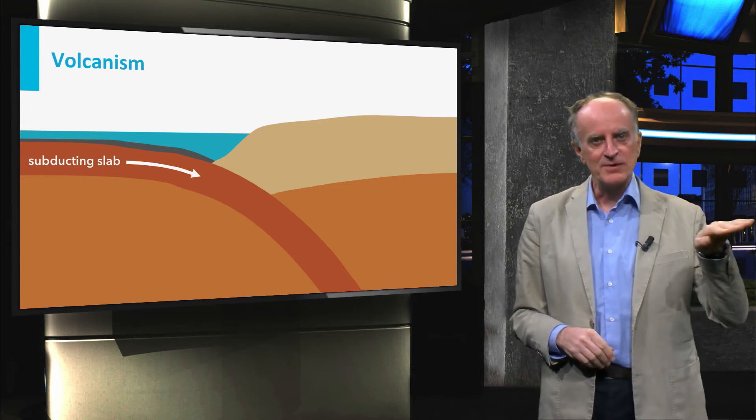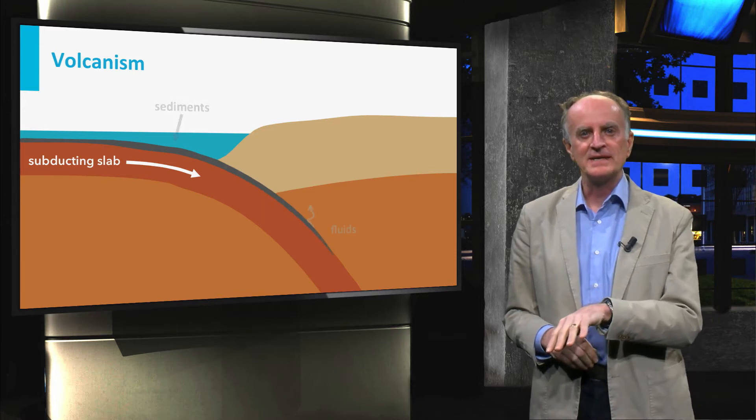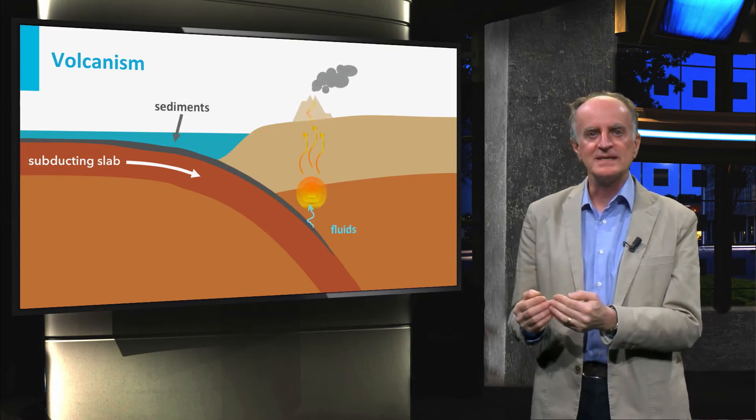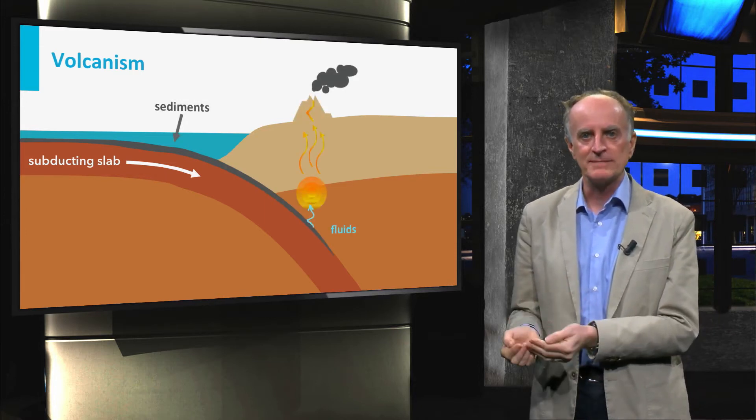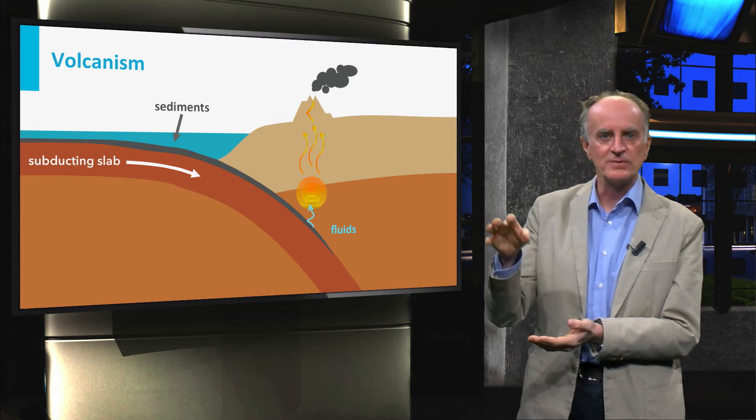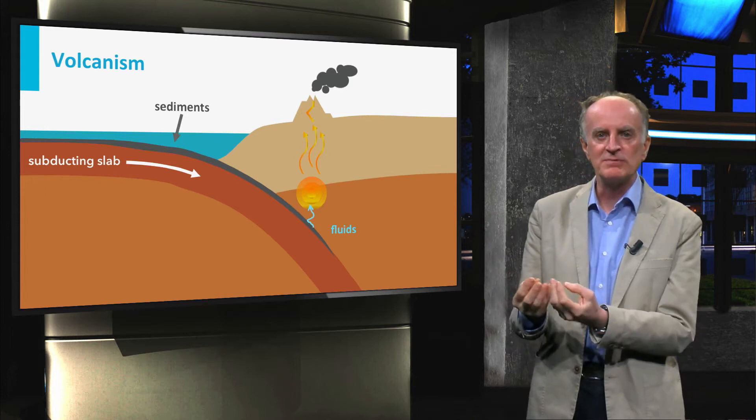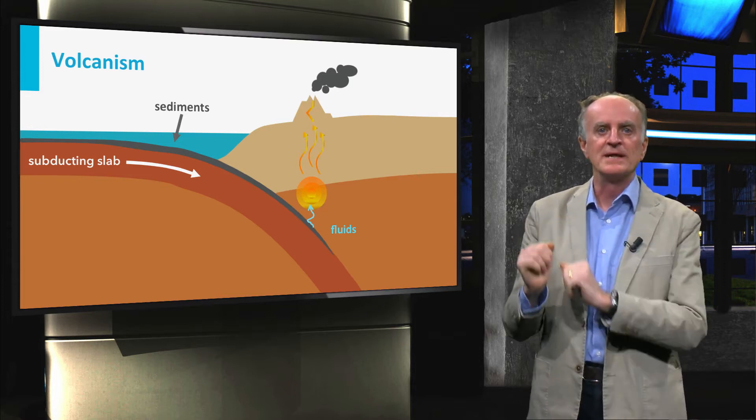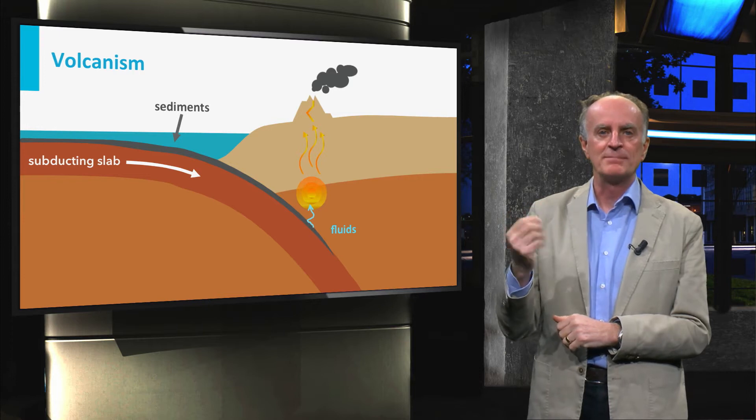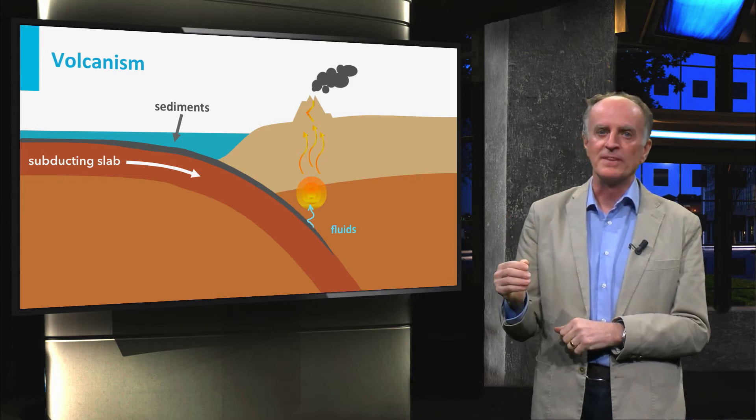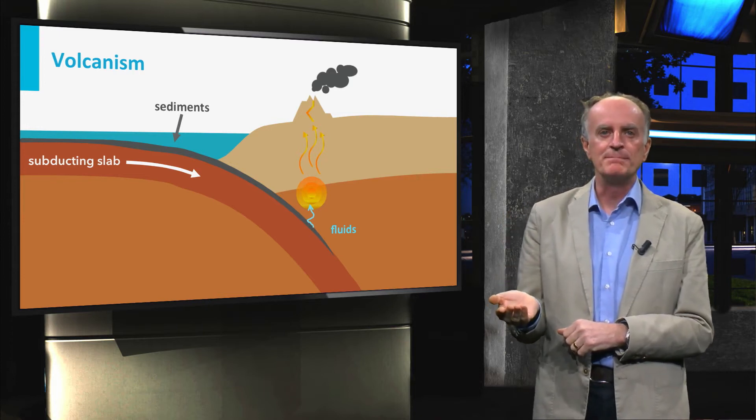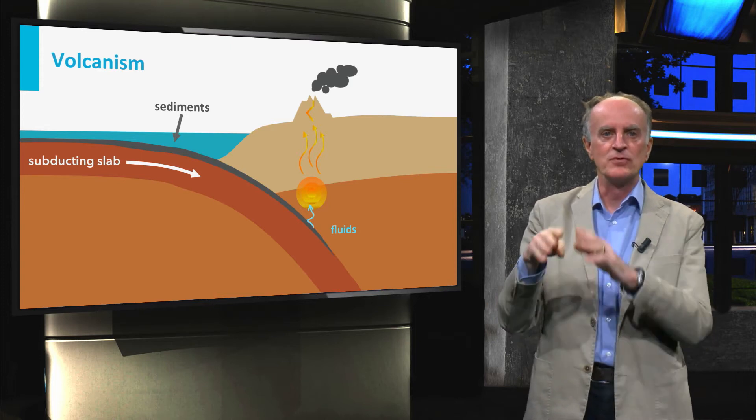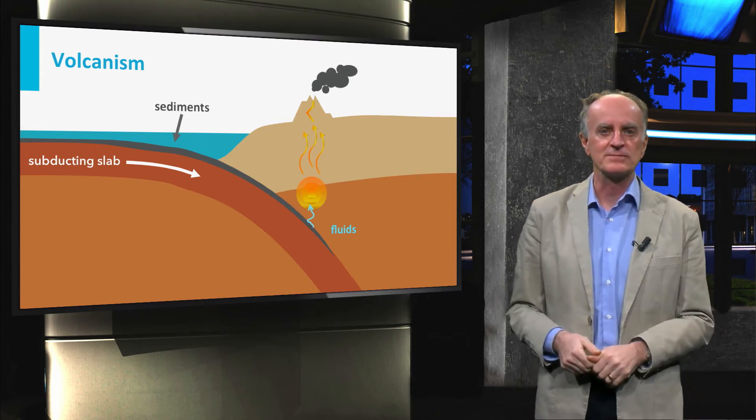During its downward movement, the subducting plate brings fluids contained in sedimentary rocks down to large depths. With increasing load of the overlying rocks, the fluids will be squeezed out of the rock, will migrate upward and will lower the melting point of the overlying upper plate rocks. These will then melt and generate magmas which will rise and form intrusive and extrusive rocks.